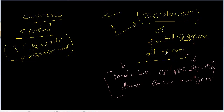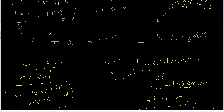We cannot measure a seizures percentage or a death percentage, but in the case of blood pressure, heart rate, or prothrombin time we can grade the response — that's why those are called graded responses. We will continue the drug receptor theory in our next lecture.